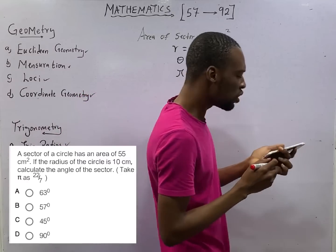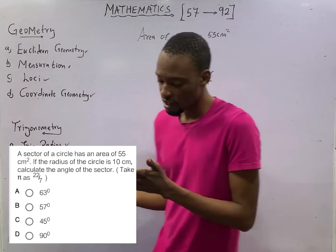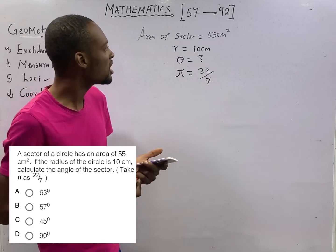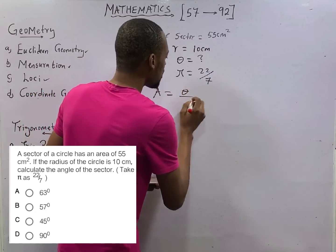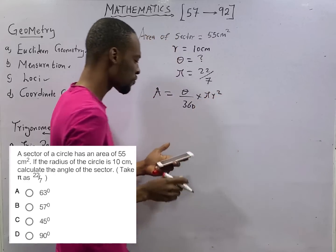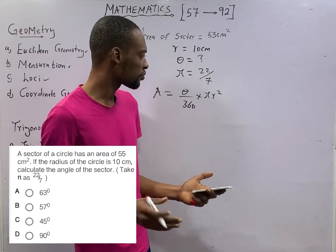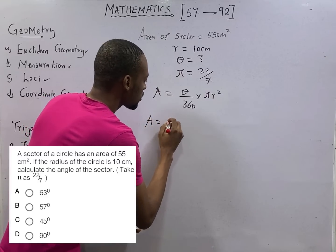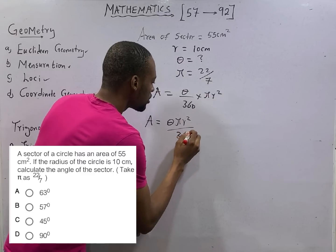So which formula is connecting theta, radius, pi and area of sector? Ladies and gentlemen, area of sector is theta over 360 times pi r square. This is the formula. This is the formula for calculating the area of sector.